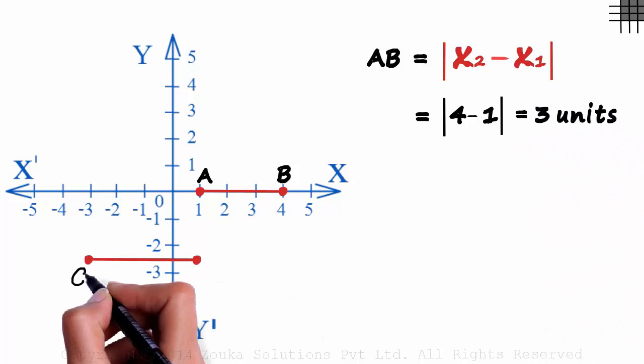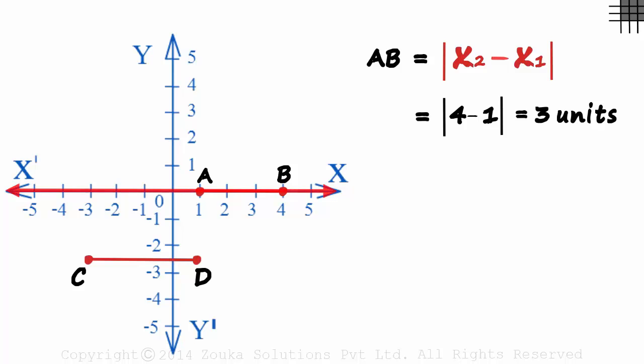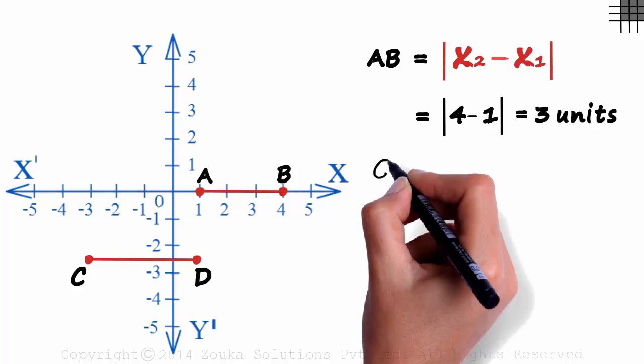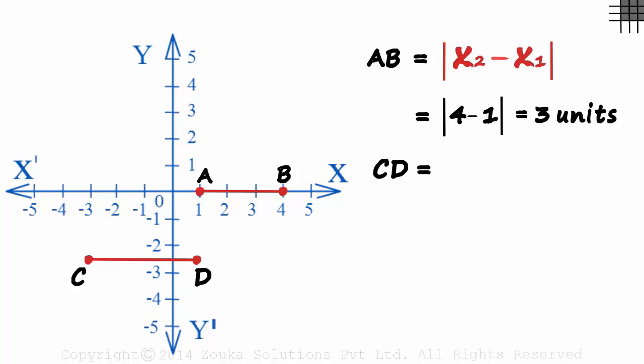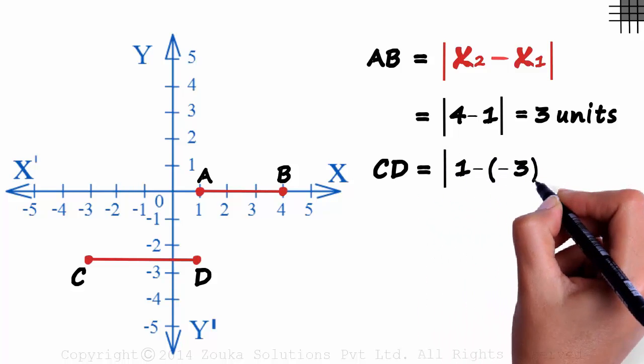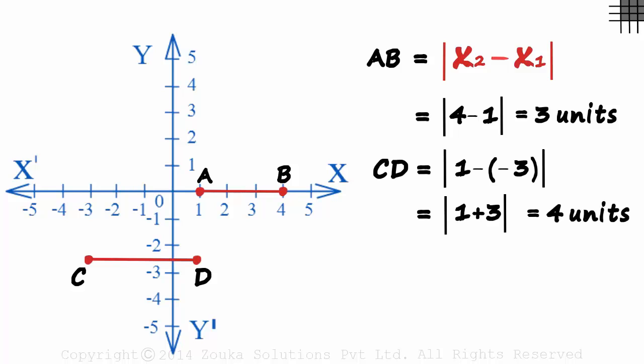Now look at line segment CD which is parallel to x-axis. What will CD be equal to? Guess what? It is still the absolute value of x2 minus x1. The x coordinates are 1 and minus 3. So the distance will be absolute value of 1 minus minus 3. That will equal 4 units.